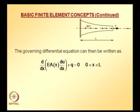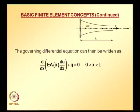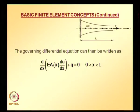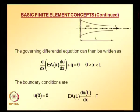This governing equation is valid over the length x from 0 to L. It is a second-order differential equation, so you require two boundary conditions to solve it. Looking at the problem, the bar is fixed at the left side. That is, at x equals 0, displacement equals 0. So the first boundary condition is: u evaluated at x equals 0 is zero.